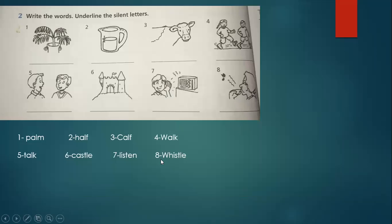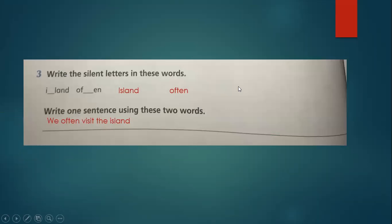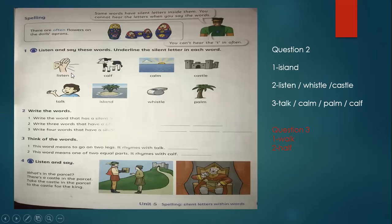Here we have silent island, island. Here often, often - we write the island here. I will read the words again: listen, cough, calm with silent L, castle, talk, island, whistle, and palm. Write the word with a silent S: island. Write the three words with a silent T: listen, whistle, castle.